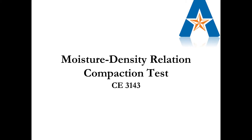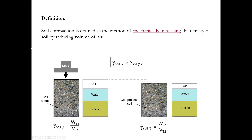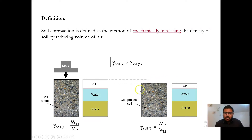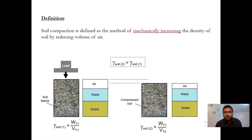In this test we will describe the moisture-density relationship of soil for defined compacting efforts. Soil compaction can be defined as the method of mechanically increasing the density of soil by reducing the volume of air. If we apply any compaction load, the volume of the soil will decrease. The total volume will be less after compaction, but the weight of the soil will remain the same. Since density is weight divided by total volume, the density of the soil will increase.